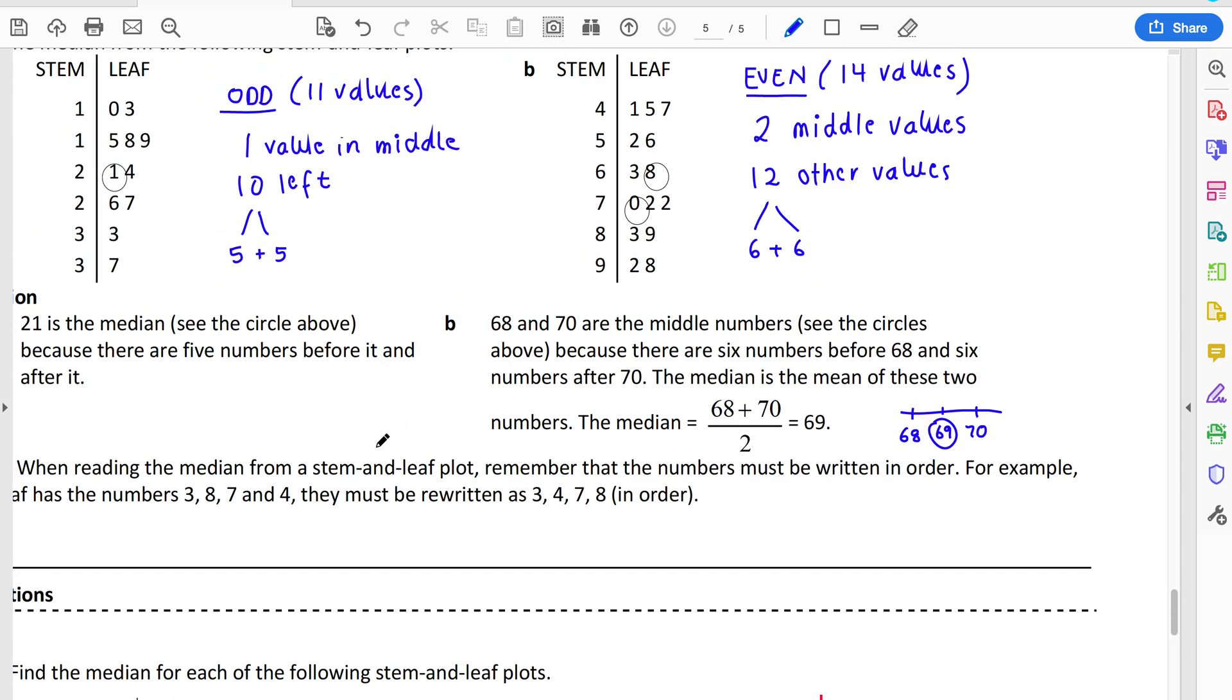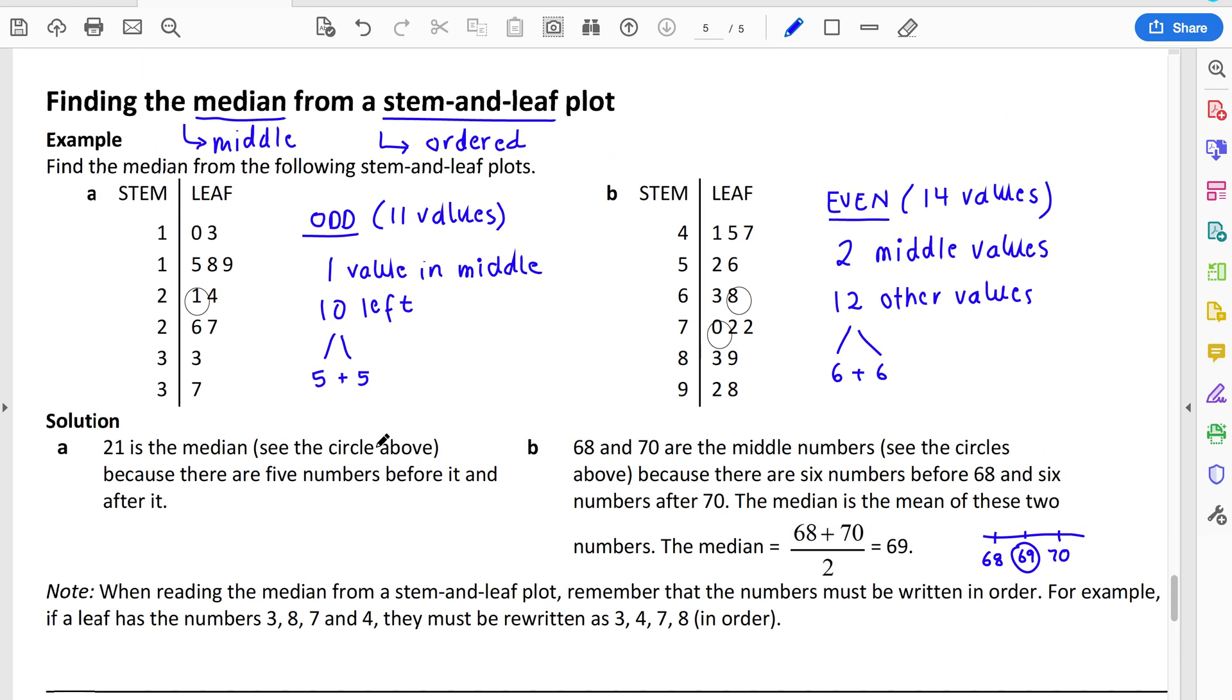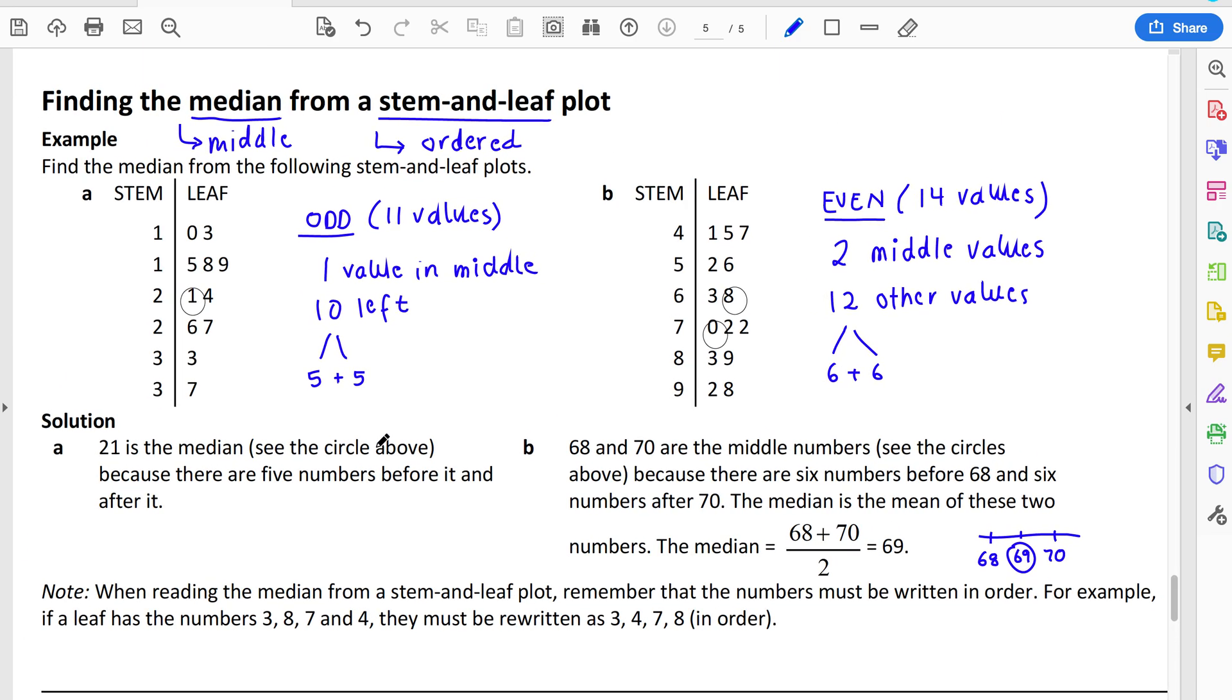So there you have the two scenarios that you are going to come across. It won't ever look any different to that. It is either an odd number of values or it's an even number of values. Where it will be different, obviously, is the two values that you've got. But if you remember that you're just adding them together and dividing by two, you'll be able to find the median very quickly from there.